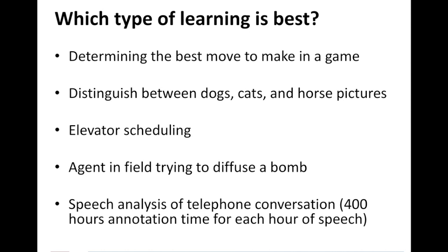Elevator scheduling — how do you schedule an elevator to go to different floors — is again a real-time task where requests come in and you cannot predict them in advance. When a request comes in, you observe how the elevator satisfies it, and if it fails you want it to improve from its past mistakes. So reinforcement learning is the best option for this scenario.